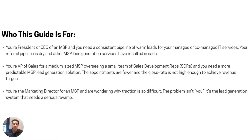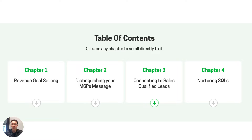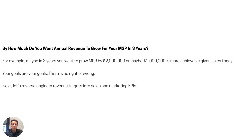In addition, if you're on the marketing side of things for a mid-size MSP, you may also benefit from what we talk about. There are four chapters in this guide. Chapter one, which we'll go over today, is revenue goal setting. Chapter two will be about differentiating and distinguishing your MSP's message. Chapter three is on how to actually have conversations and connect with qualified sales leads. And the final chapter is on how to nurture those leads long-term so they warm up.